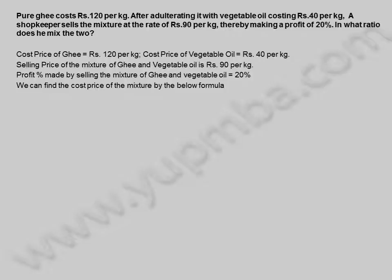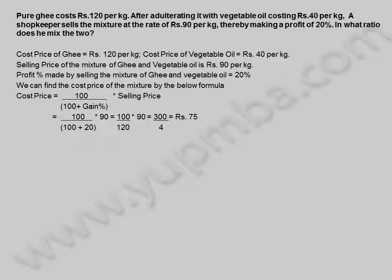We can find the cost price of the mixture by the formula: cost price = (100 / (100 + gain%)) × selling price = (100 / (100 + 20)) × 90 = (100 / 120) × 90 = 300/4 = 75 rupees.